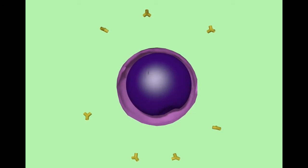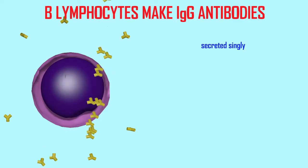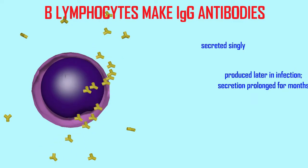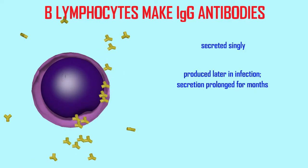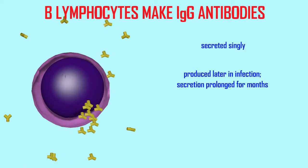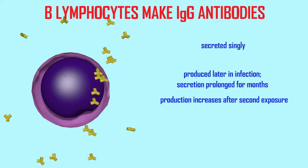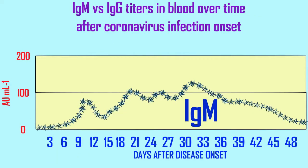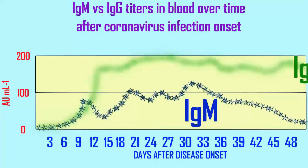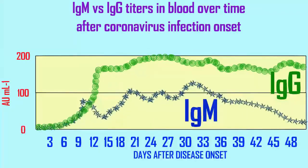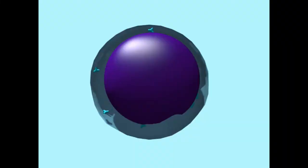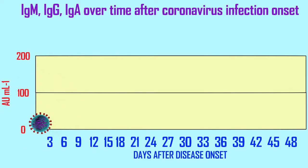In addition to IgM, which is secreted as a pentamer with five antibodies joined together, IgG antibodies can be secreted singly. IgG tends to be produced later in the infection, its secretion is prolonged for months, and its production increases after second exposures. If a blood test showed IgG antibodies against coronavirus but not IgM, this patient would have had prior exposure to coronavirus, but not recently.